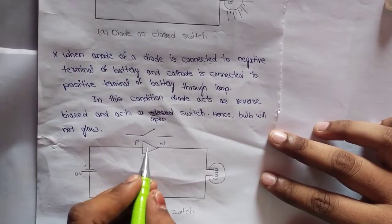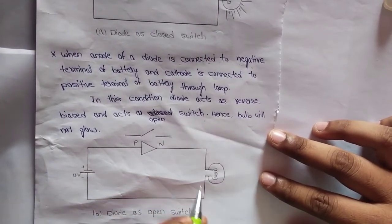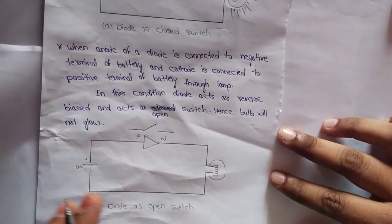So current will not flow through this circuit and the bulb will not glow.